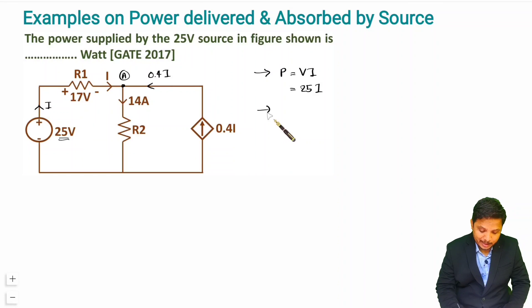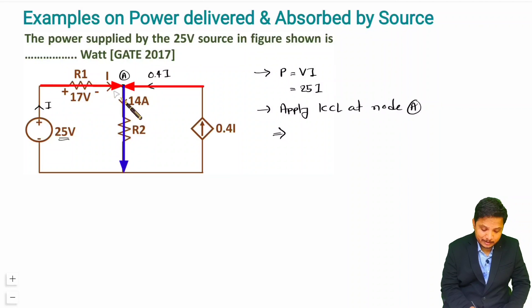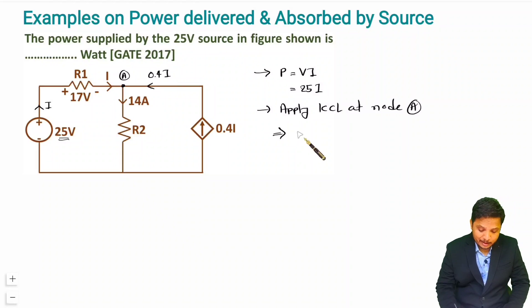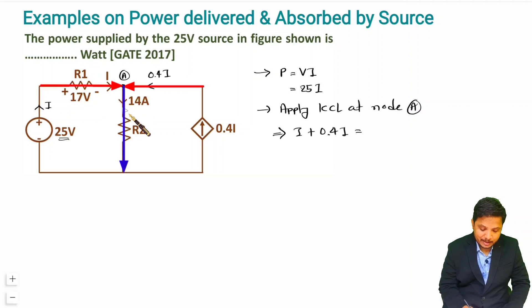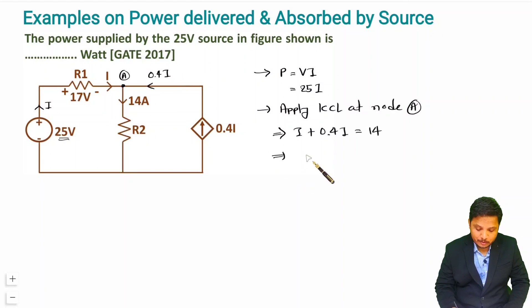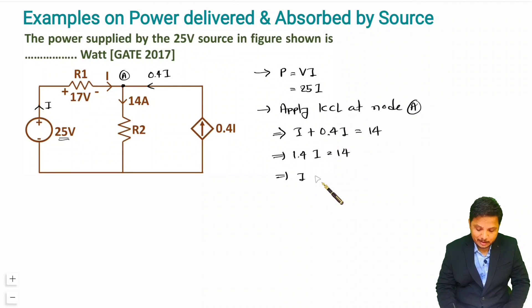Let us apply KCL at node A. Entering current equals leaving current. Entering currents are I and 0.4I, so I plus 0.4I equals 14 ampere. That gives 1.4I equals 14, so I equals 10 ampere.